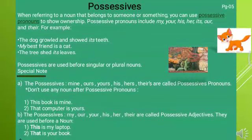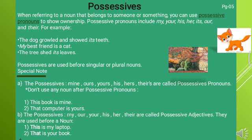Possessive: When referring to a noun that belongs to someone or something, you can use possessive pronouns to show ownership. Possessive pronouns include my, your, his, her, its, our, and their. For example, the dog growled and showed its teeth. My best friend is a cat. The tree shed its leaves. The words 'its' and 'my' are possessives.